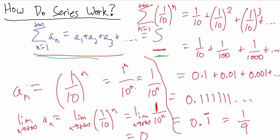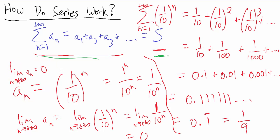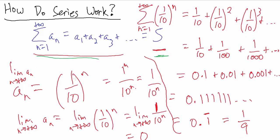Remember what we said earlier: the limit as n goes to positive infinity of a sub n equals zero — but it's not enough to just know that. We also have to know that a sub n goes to zero quickly enough. In this case, it turns out they do go to zero quickly enough. We'll talk about exactly what quickly enough means for this type of series, which is called a geometric series, in later videos.